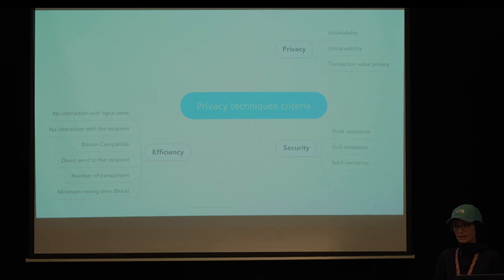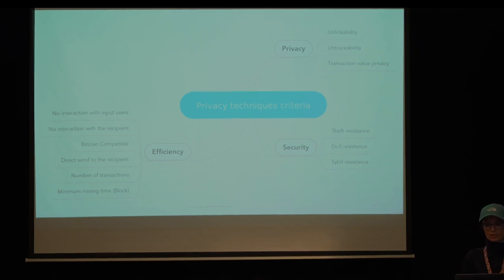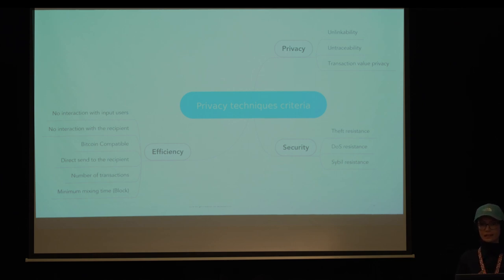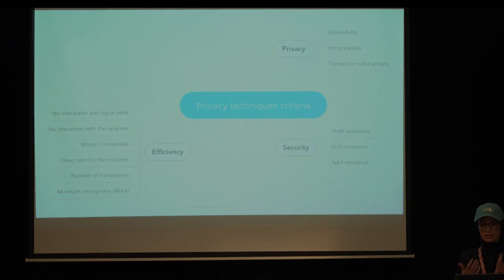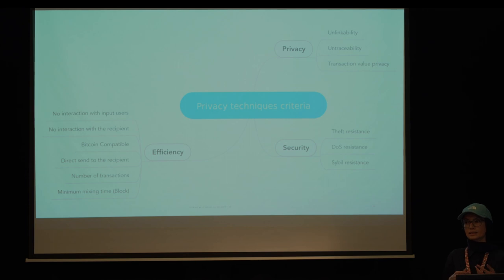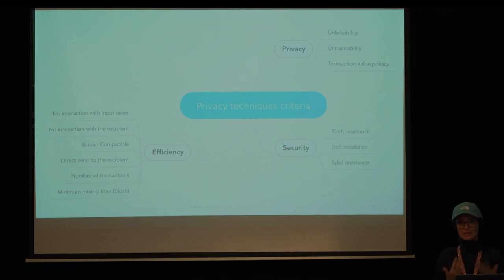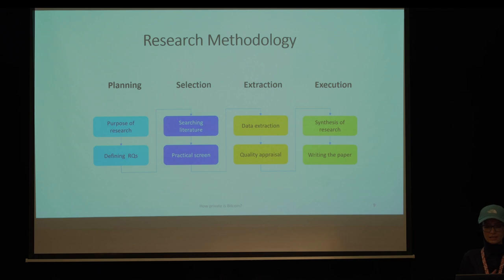Many privacy preserving techniques have been proposed to provide better privacy for Bitcoin transactions, and we evaluate them based on different criteria: privacy, security, and efficiency. For privacy, we evaluated them based on linkability, traceability, and transaction value privacy. For security, we evaluate theft resistance, DoS resistance, and Sybil resistance. For efficiency, we looked at whether protocols need interaction between input users or with the recipient, if they are Bitcoin compatible, or if they need extra delays and extra fees.